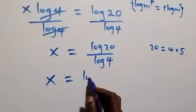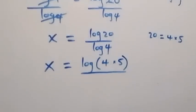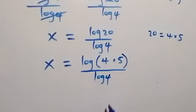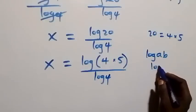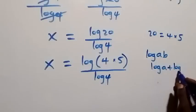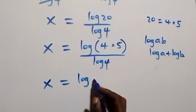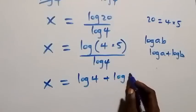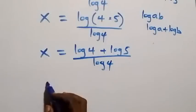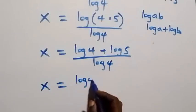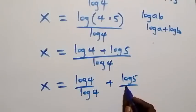From here, we can write 20 as 4 times 5, so x equals log(4 times 5) over log 4. Applying the product law of logarithms — log(a times b) equals log a plus log b — this gives us x equals (log 4 plus log 5) over log 4. We then separate this into two fractions: x equals log 4 over log 4, plus log 5 over log 4.